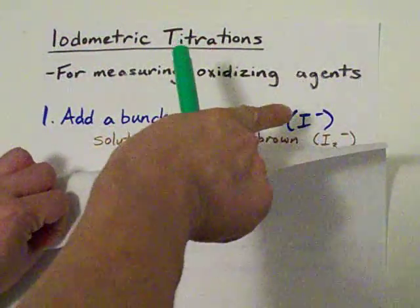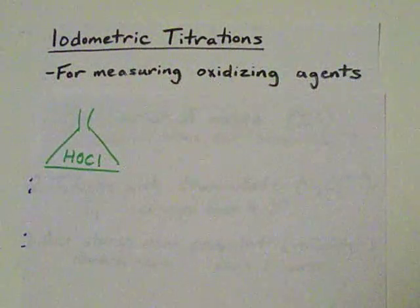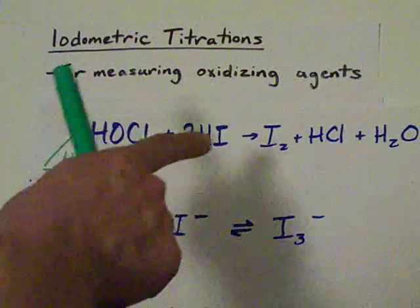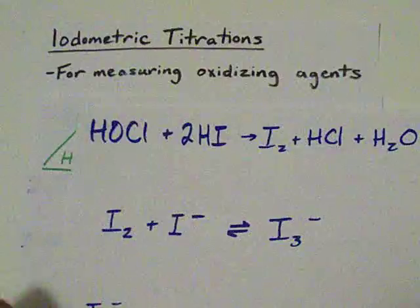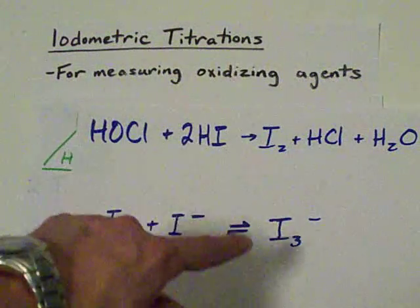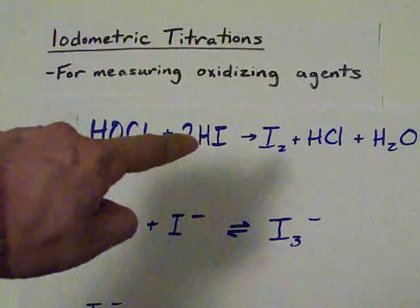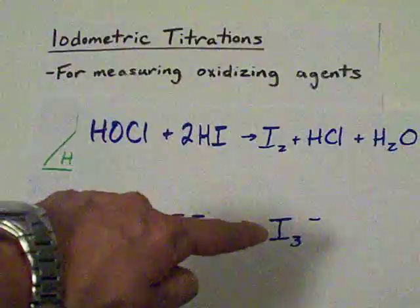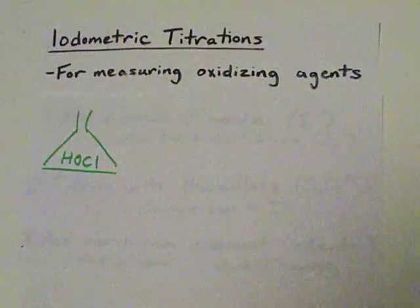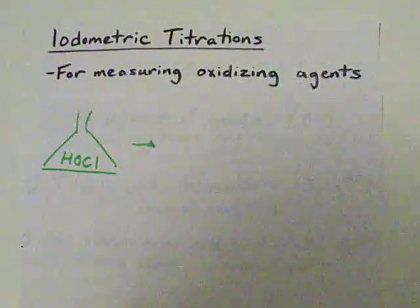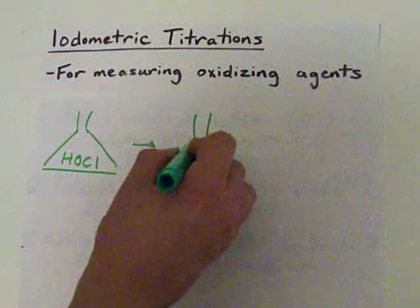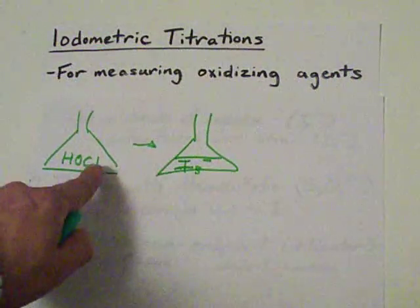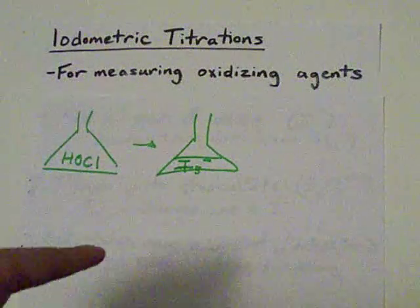Then check it out. I minus, extra I minus - that's why you added a buttload of it - complexes with the molecular iodine produced to make I3 minus. The point is you add a whack load of iodide, makes I3 minus. For every two iodides that got reduced, you end up with one of these. All right, so now inside your solution, you don't have any more HOCl, but you have an amount of I3 minus that corresponds to how much oxidizing agent or HOCl you started with.